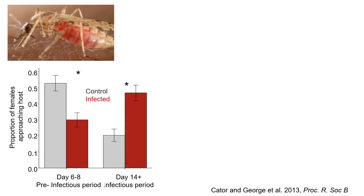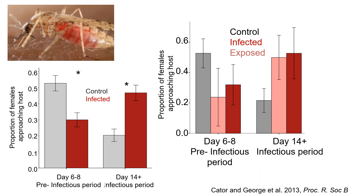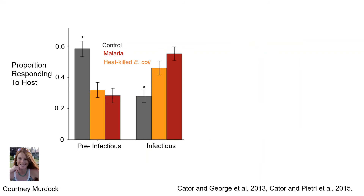For example, in our data looking at host seeking in malaria-infected mosquitoes, we found that when we dissected the group shown in the red bars to determine which ones had actually been infected when they took that early infectious blood meal — and which ones were simply exposed — there was no difference between the behavior of infected and exposed individuals. This led us to further explore the role of the mosquito's own immune response in these changes in behavior.